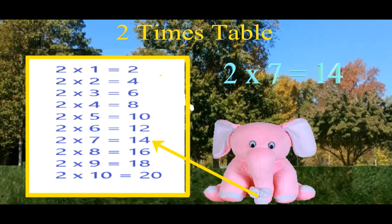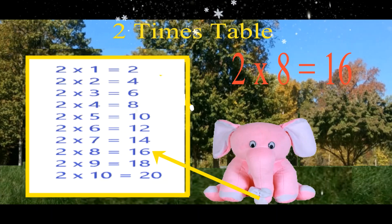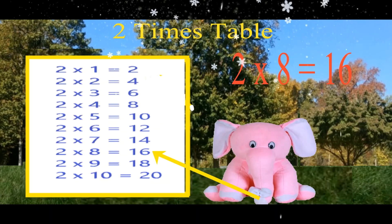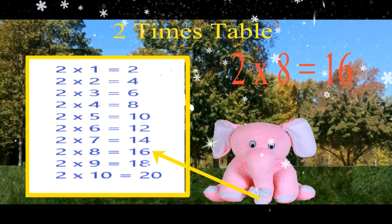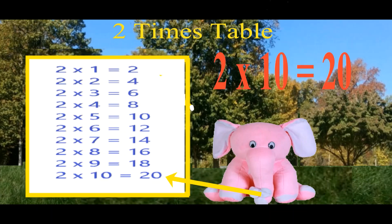2 7's are 14. 2 8's are 16. 2 9's are 18. 2 10's are 20.